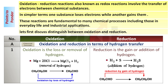Reduction is the gain or addition of hydrogen. Example: the elements hydrogen and sulfur can react to form hydrogen sulfide, also known as hydrosulfuric acid. In this reaction, hydrogen is added to sulfur. Hence, it is reduction with respect to sulfur.